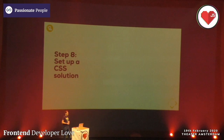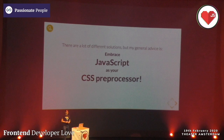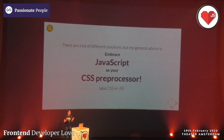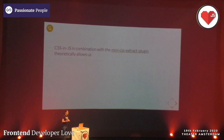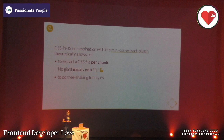Step eight: set up a CSS solution. This is kind of hard because there are a lot of different solutions, but my general advice is: embrace JavaScript as your CSS preprocessor - it's really nice, you already know JavaScript and you can leverage it to create your CSS. This is also known as CSS-in-JS. CSS-in-JS combined with the mini-css-extract-plugin allows us to extract a CSS file per chunk, so we don't get a giant main.css - we only get the styles necessary for that part of the code. It also enables tree shaking for styles, so we have no unused styles.